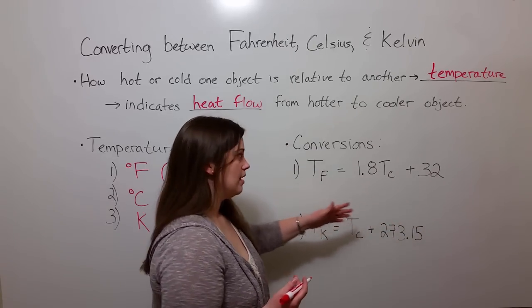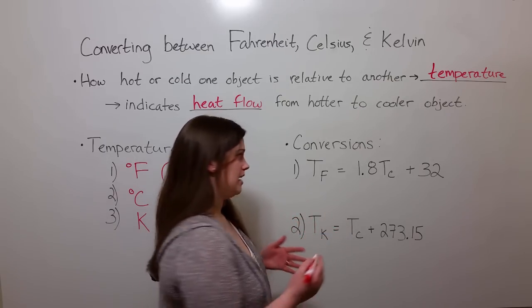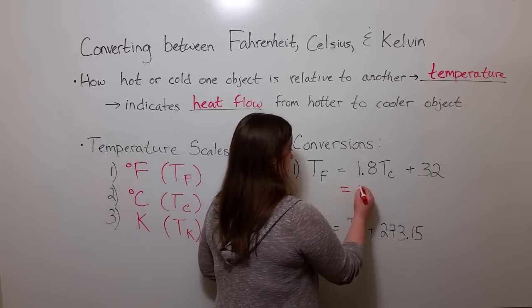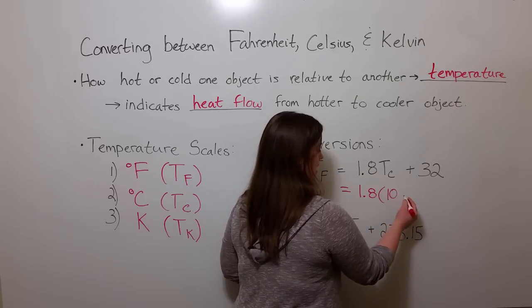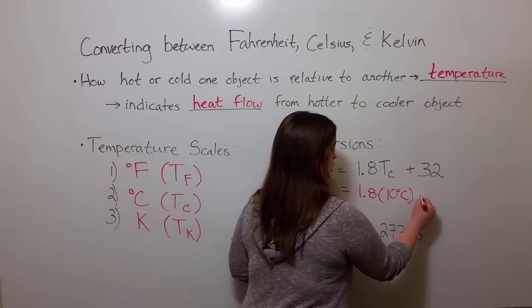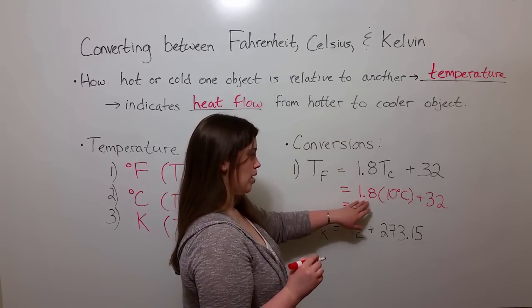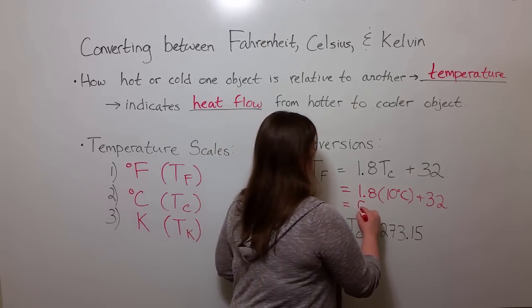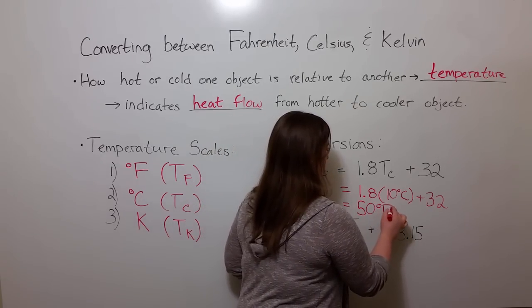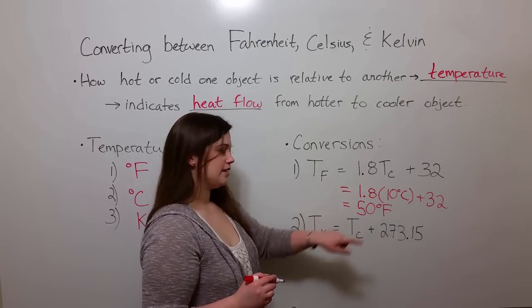Let's do an example. Let's say that we want to convert from 10 degrees Celsius into Fahrenheit. Well, this would be 1.8 times 10 degrees Celsius plus 32. And this is going to equal 1.8 times 10 is 18 plus 32, 50 degrees Fahrenheit. So 10 degrees Celsius is equal to 50 degrees Fahrenheit.